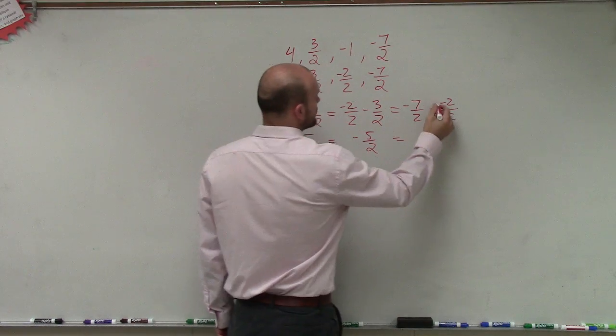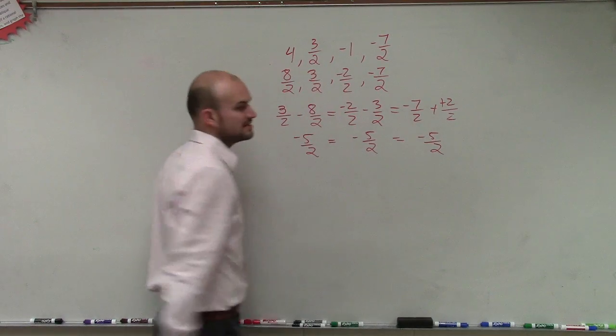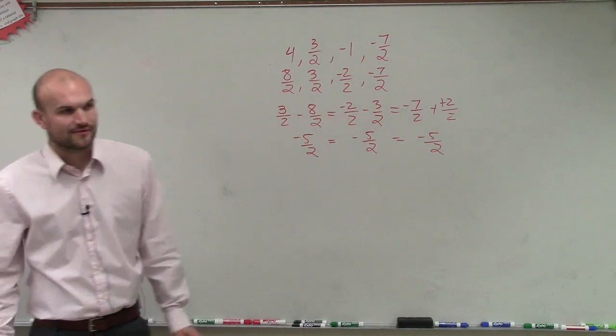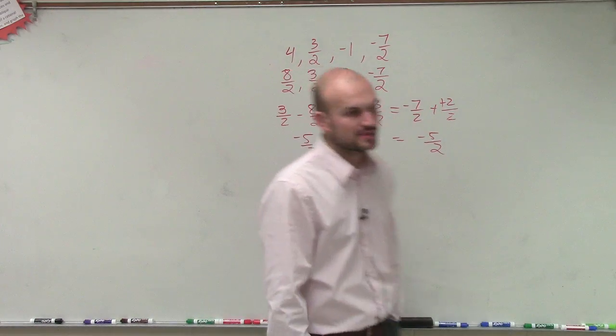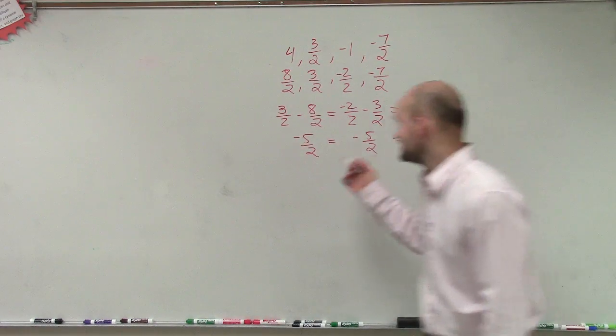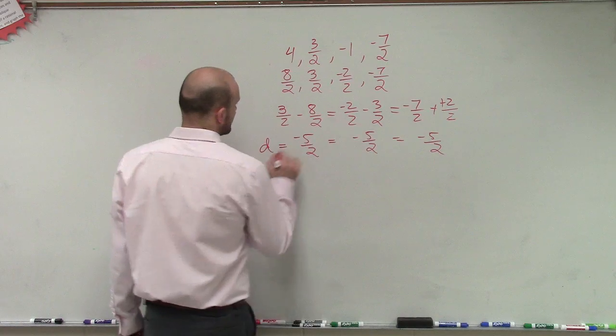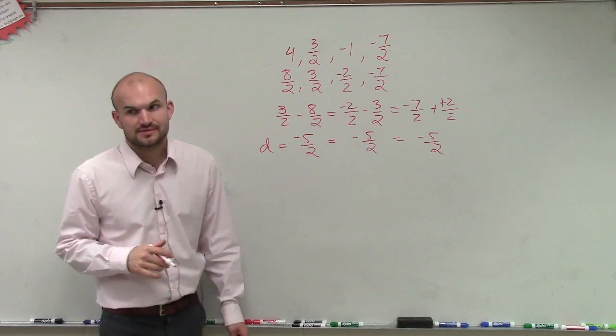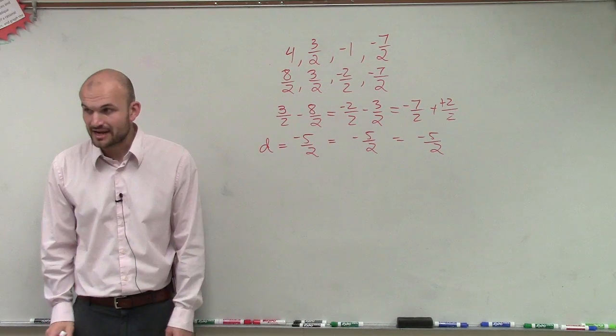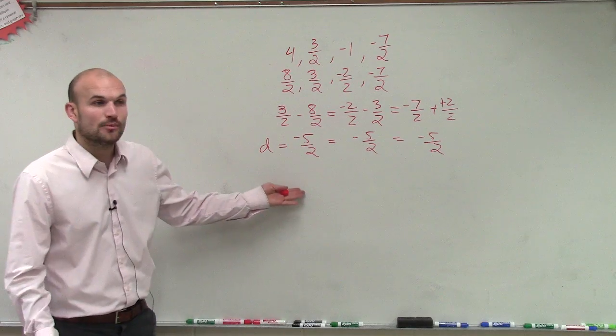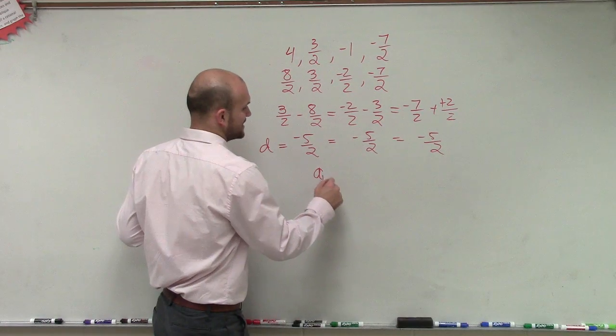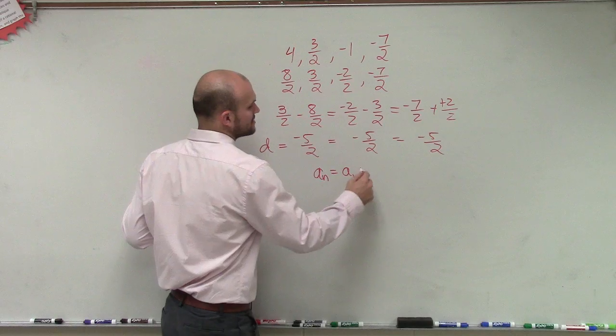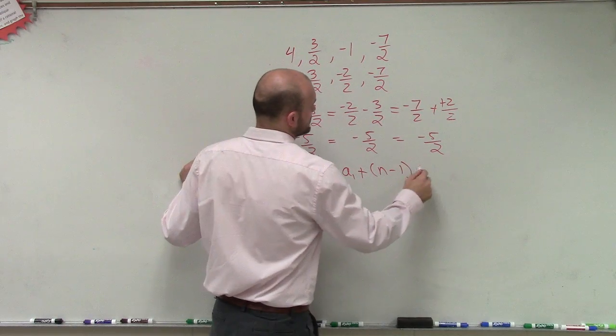So therefore, you guys can see that's the difference. Don't freak out when you see fractions. Just try to work with them as best we can. So now we know that d equals negative 5 halves. Now that we know d equals negative 5 halves, we can go back to our formula, which states a sub n equals a sub 1 plus n minus 1 times d.